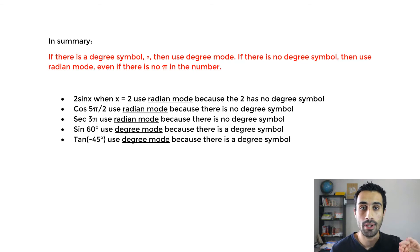Let's finish this off with quick examples. 2 sine of x when x equals 2. We take x and put it in here. You want to use radian mode because the 2 has no degree symbol. Cosine of 5π over 2. We want to use radian mode because there's no degree symbol and also it has a pi.